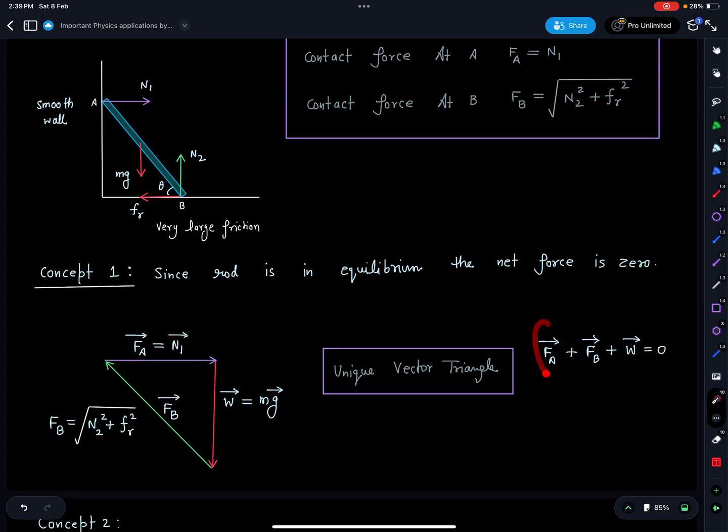So first concept: because net force is zero, that means contact force at A plus B plus weight W of the rod is going to be zero. Now out of that, W has a fixed direction, FA has a fixed direction, that means FB will adjust its value to complete the triangle. So this is N1, this is W, so FB must be something like this.